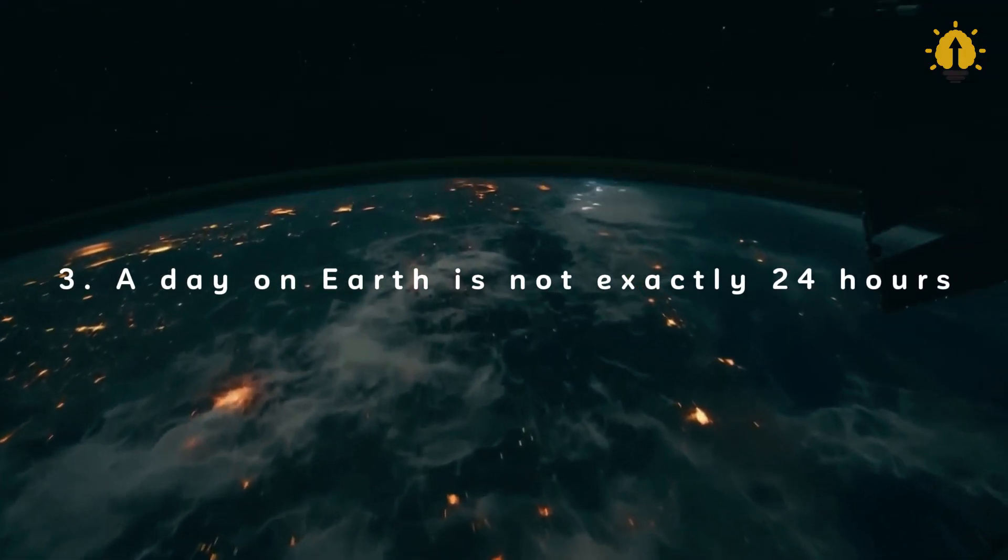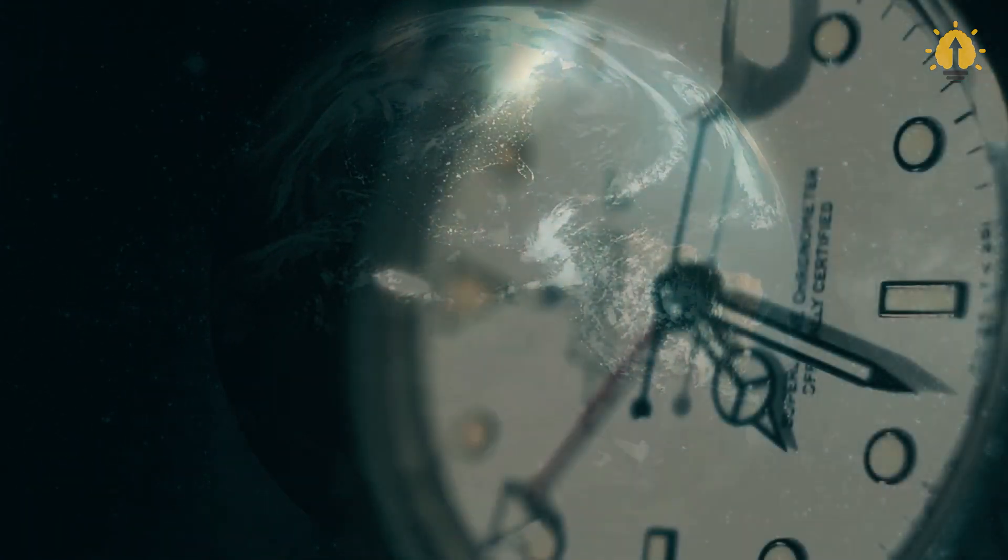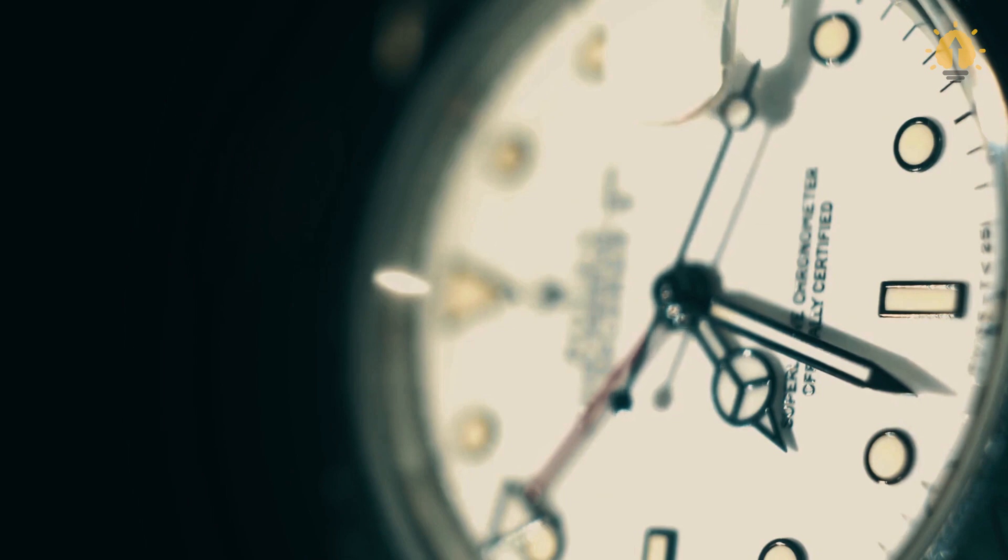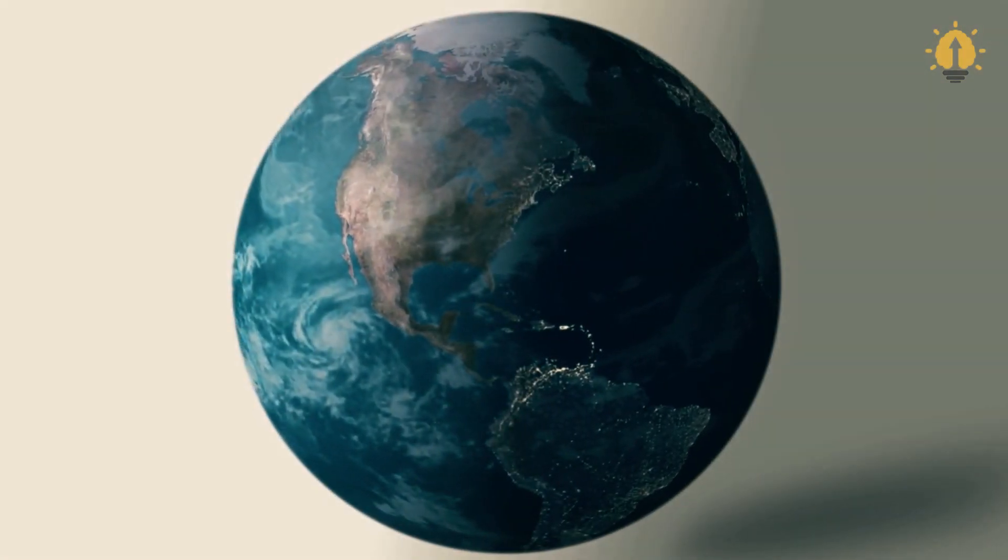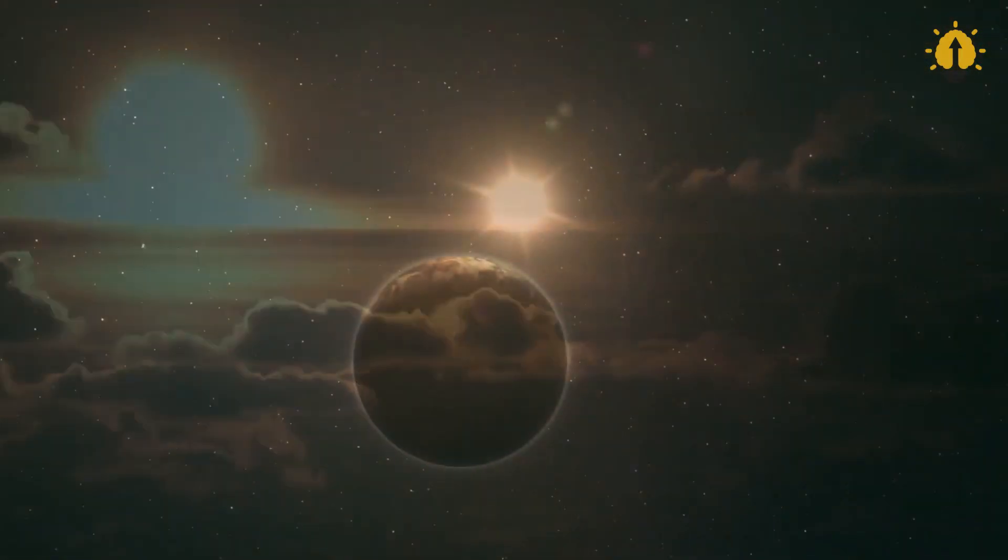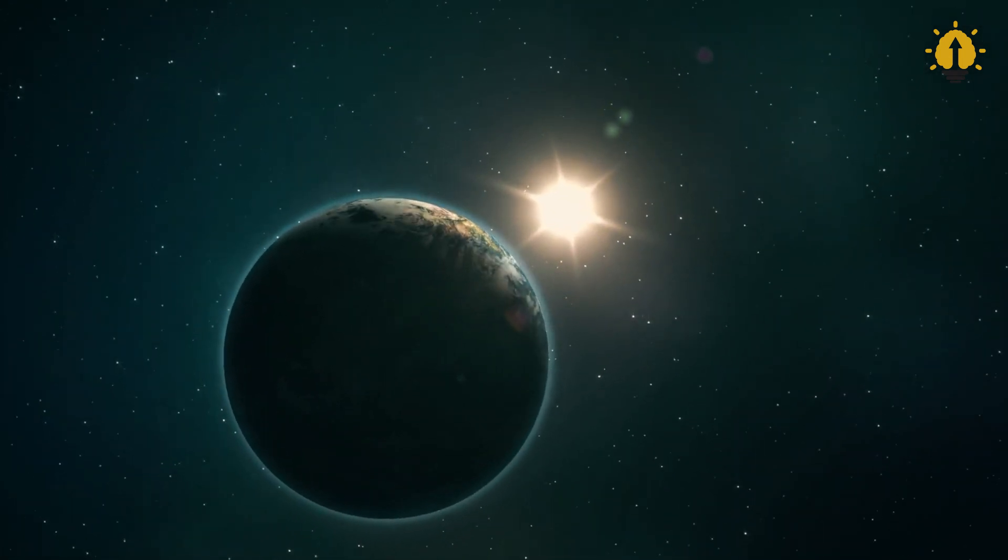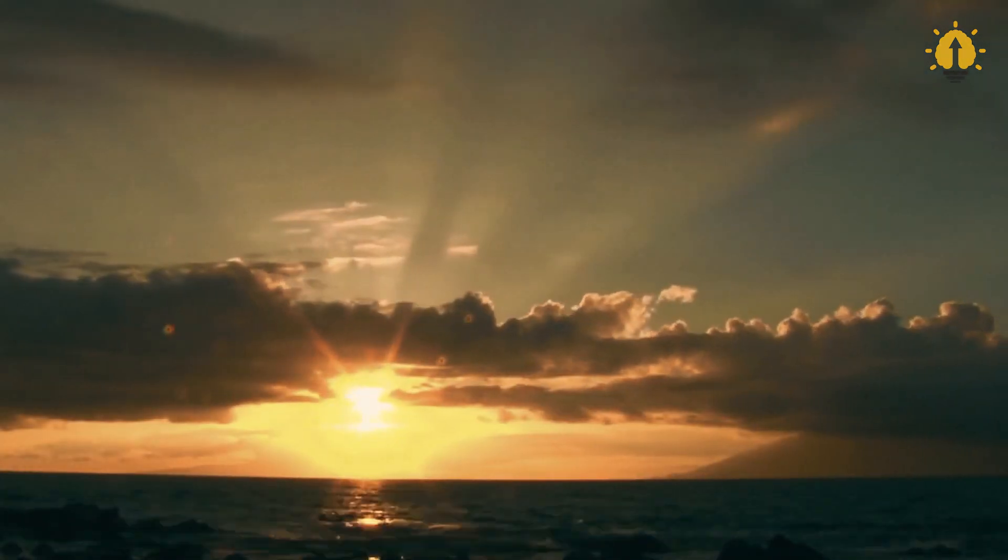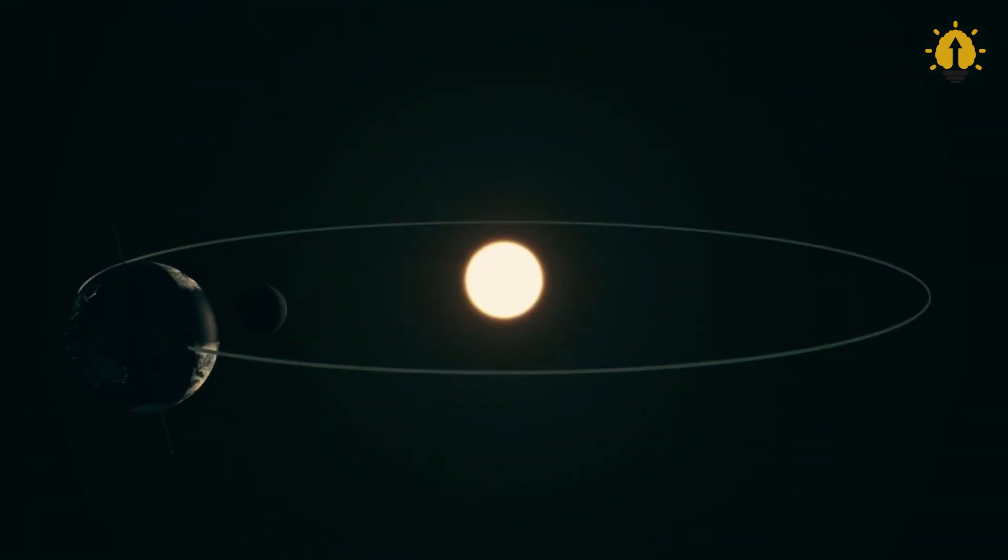Number 3: A day on Earth is not exactly 24 hours. We've always been told that there are 24 hours in a day. Or are they? A day on Earth isn't precisely 24 hours long. In reality, it's about 23 hours, 56 minutes, and 4 seconds. A day marks the time it takes for our planet to complete a full twirl around the Sun, and for all practical purposes, we round it up to 24 hours. But the Earth's actual spin falls short by roughly 4 minutes.